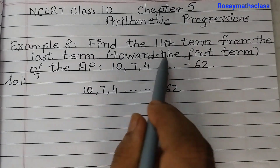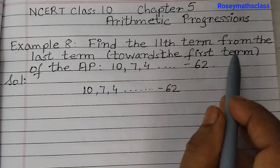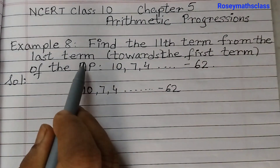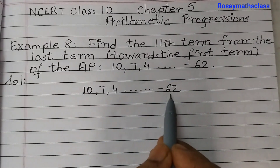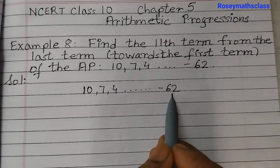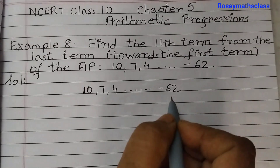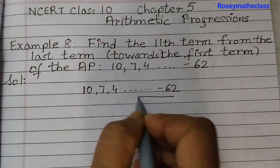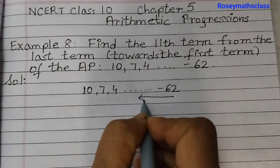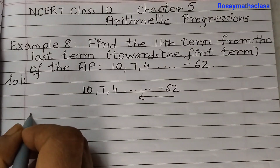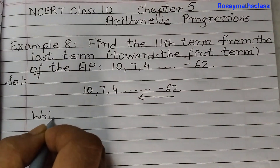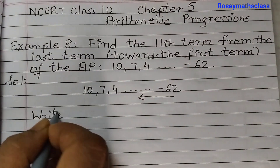We need to find the 11th term from the last term, which means from the term minus 62 we need to find the 11th term — we need to move in that direction. So what you do is, first write the given AP in reverse order.